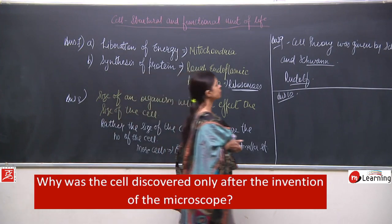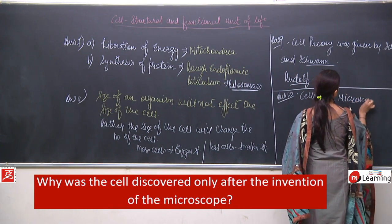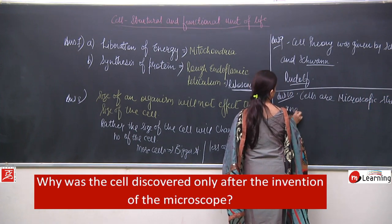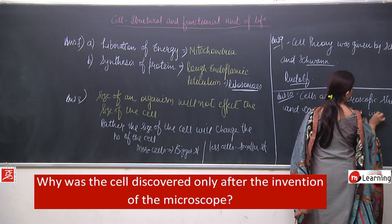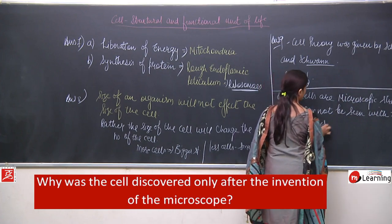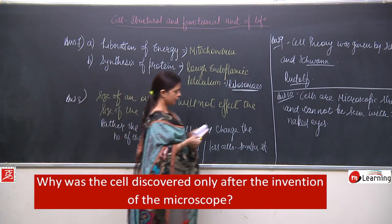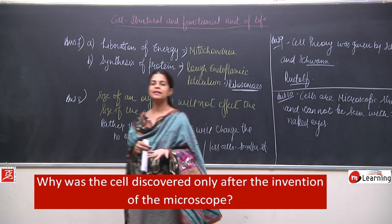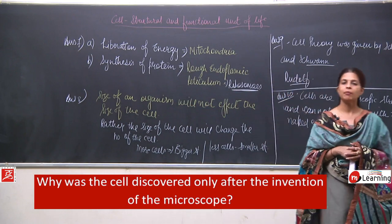It was not possible to find out anything about the cell without the microscope. Cells are microscopic structures and cannot be seen with the naked eye. It was only possible to study or to see the cell when the microscope was available. That is why cell discovery was only possible after the invention of the microscope.